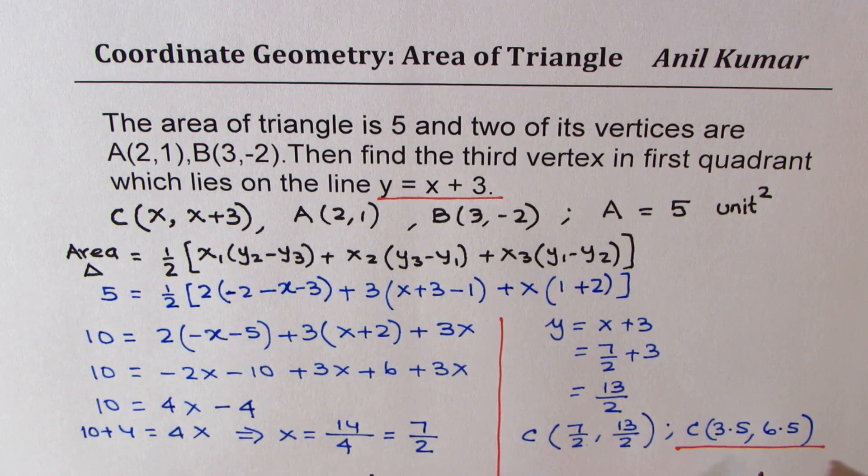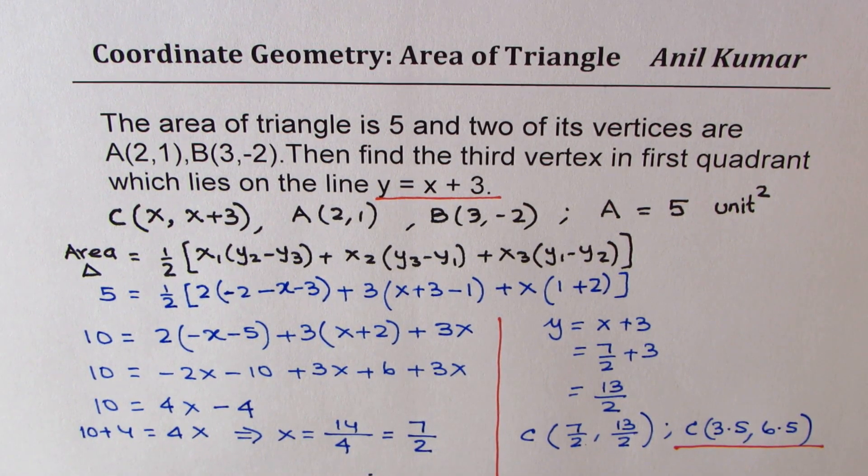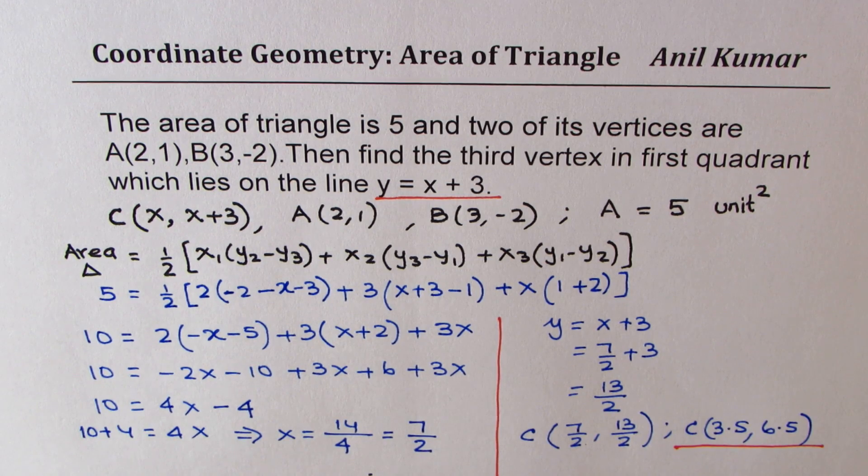Which will form the third vertex of the triangle giving area of 5 unit square. So I hope the steps are absolutely clear. Feel free to write your comments and share your views. If you like and subscribe to my videos, that would be great. Thanks for watching and all the best.